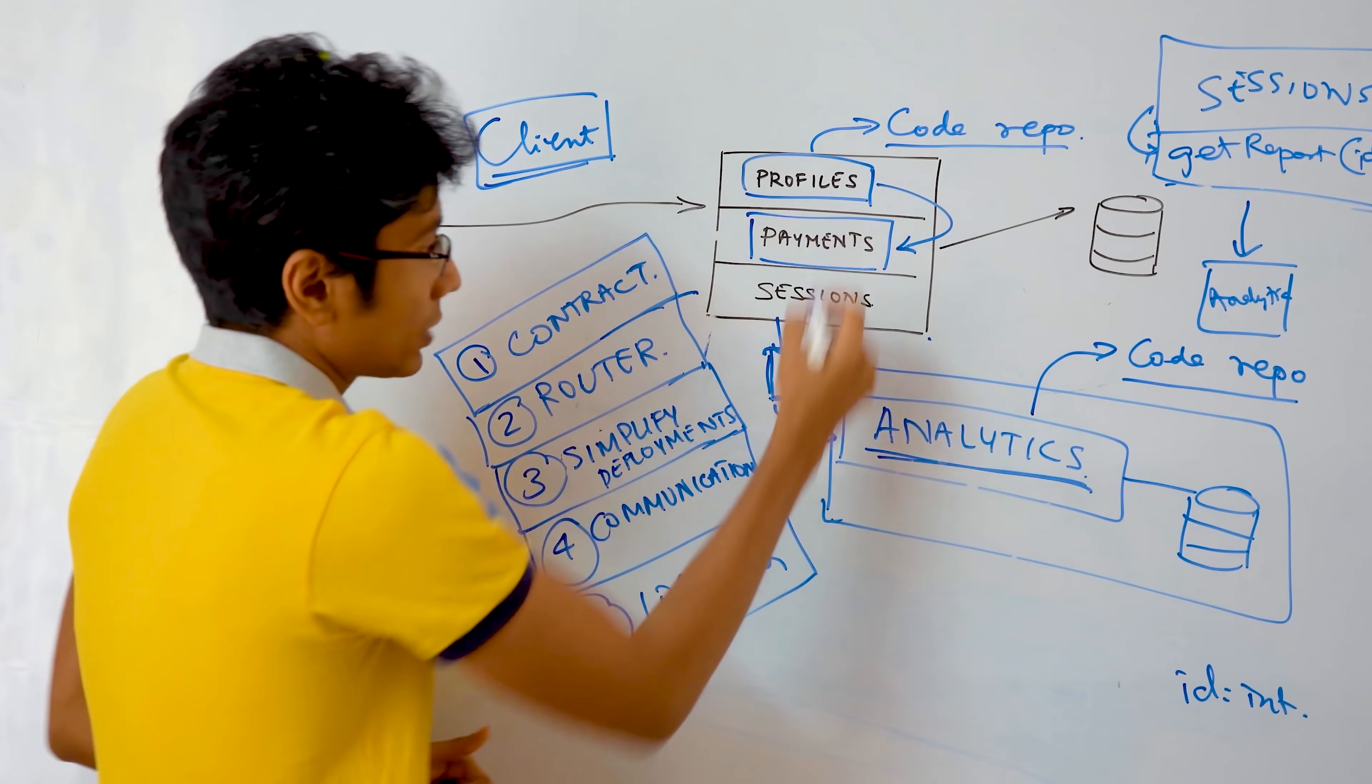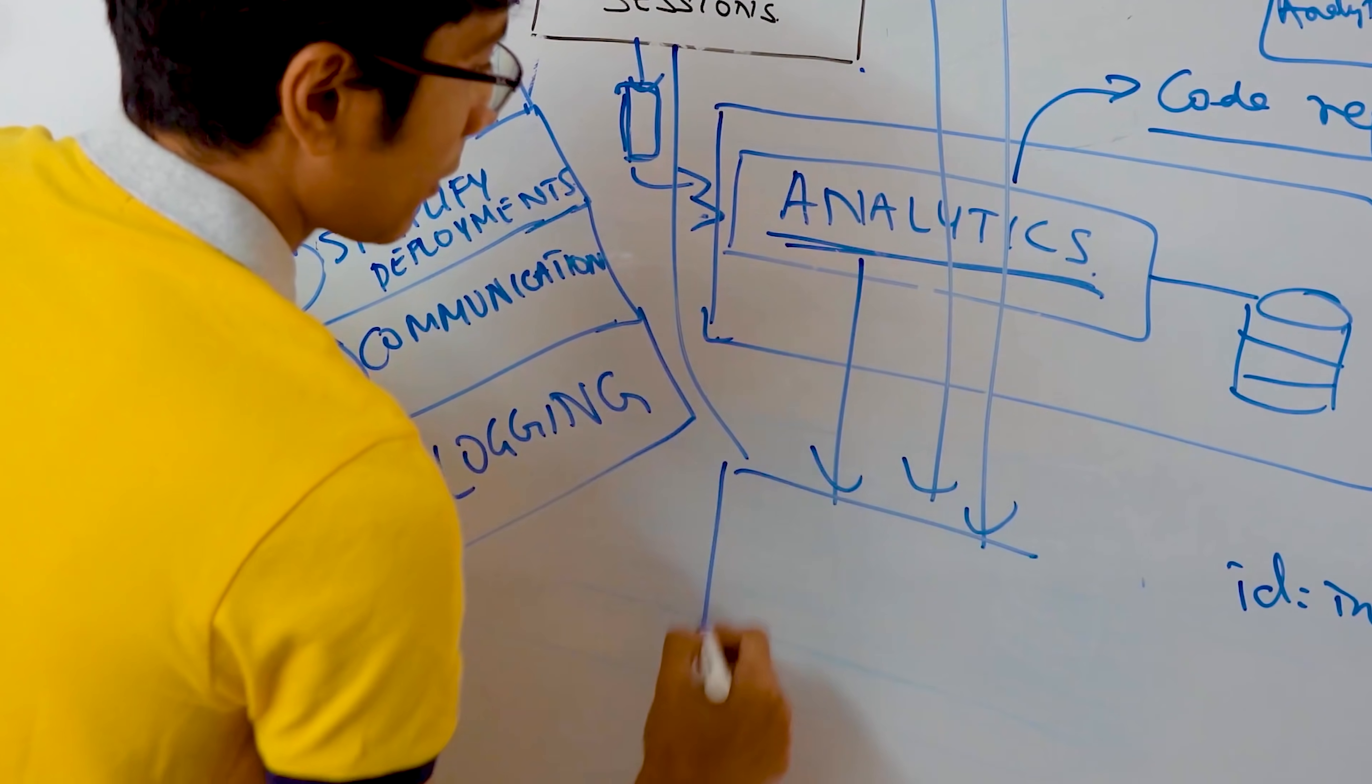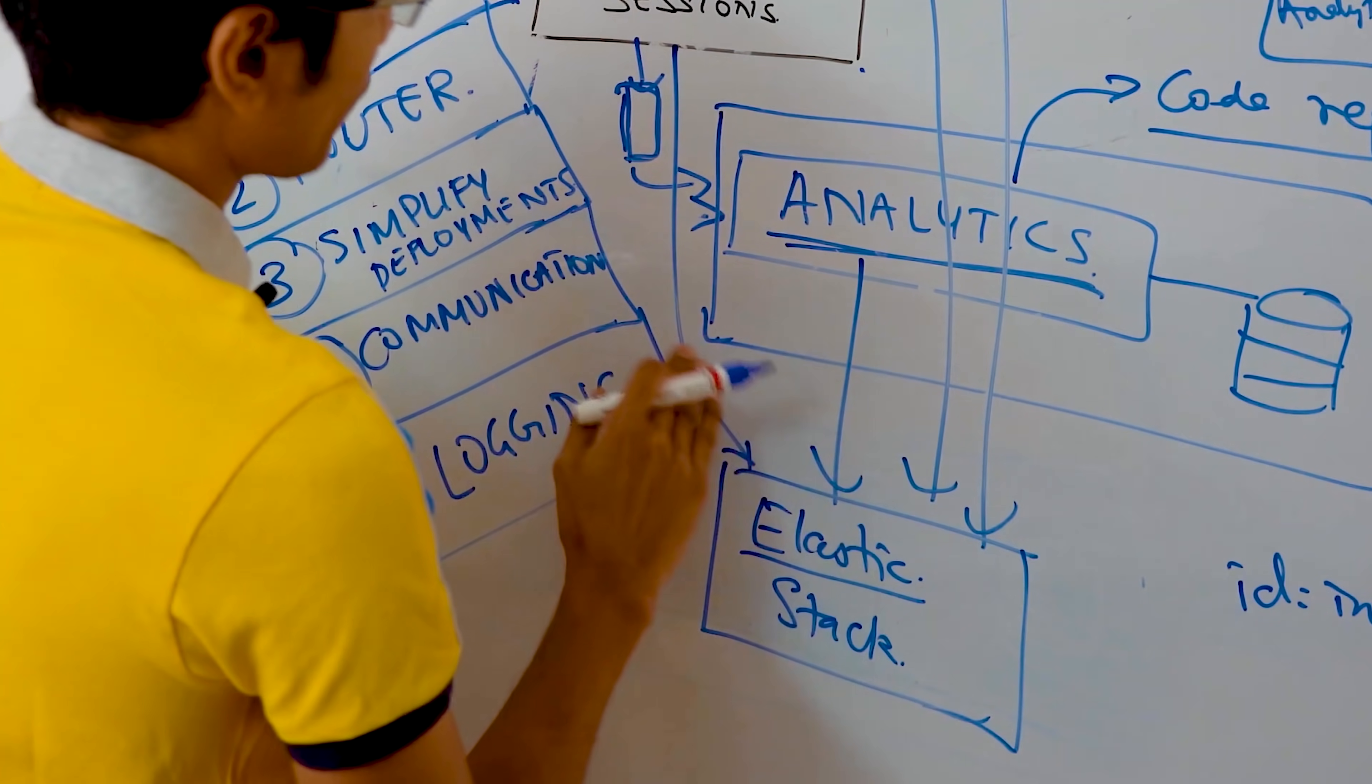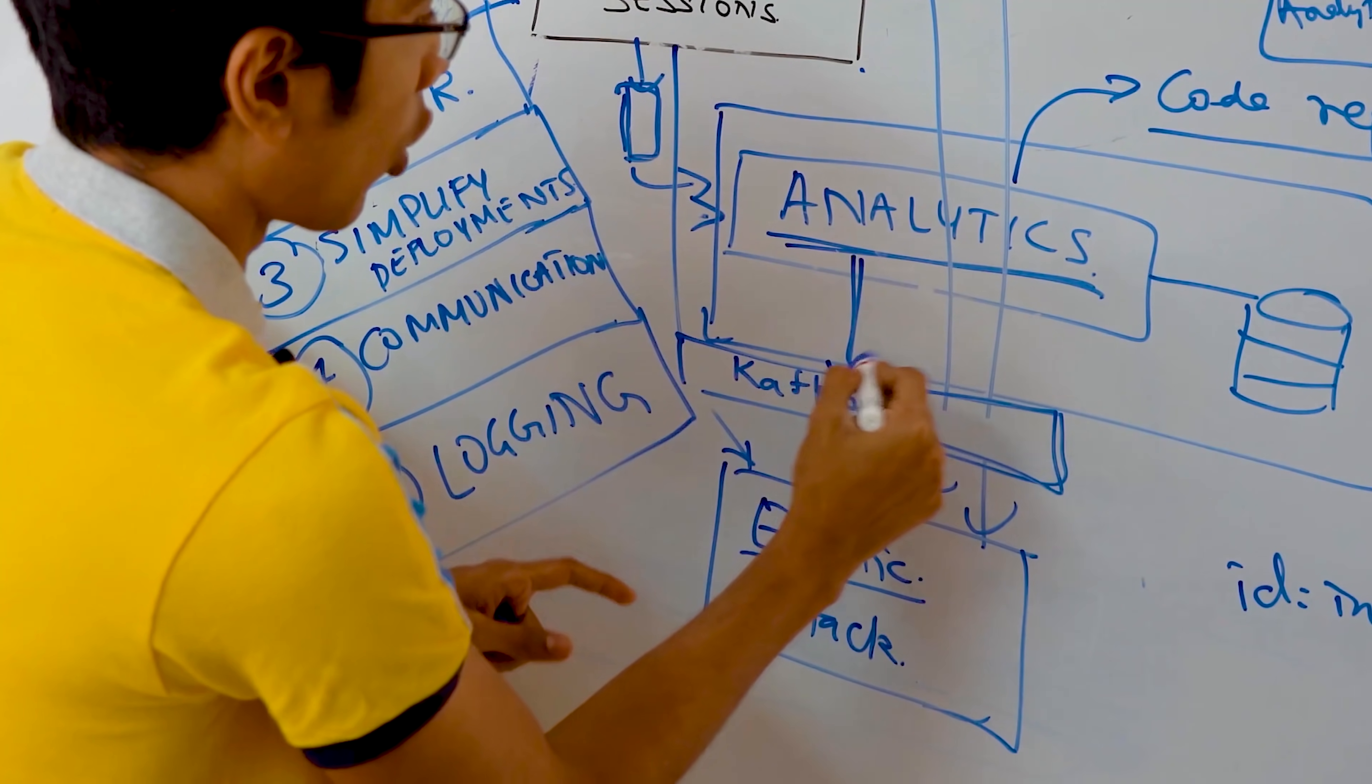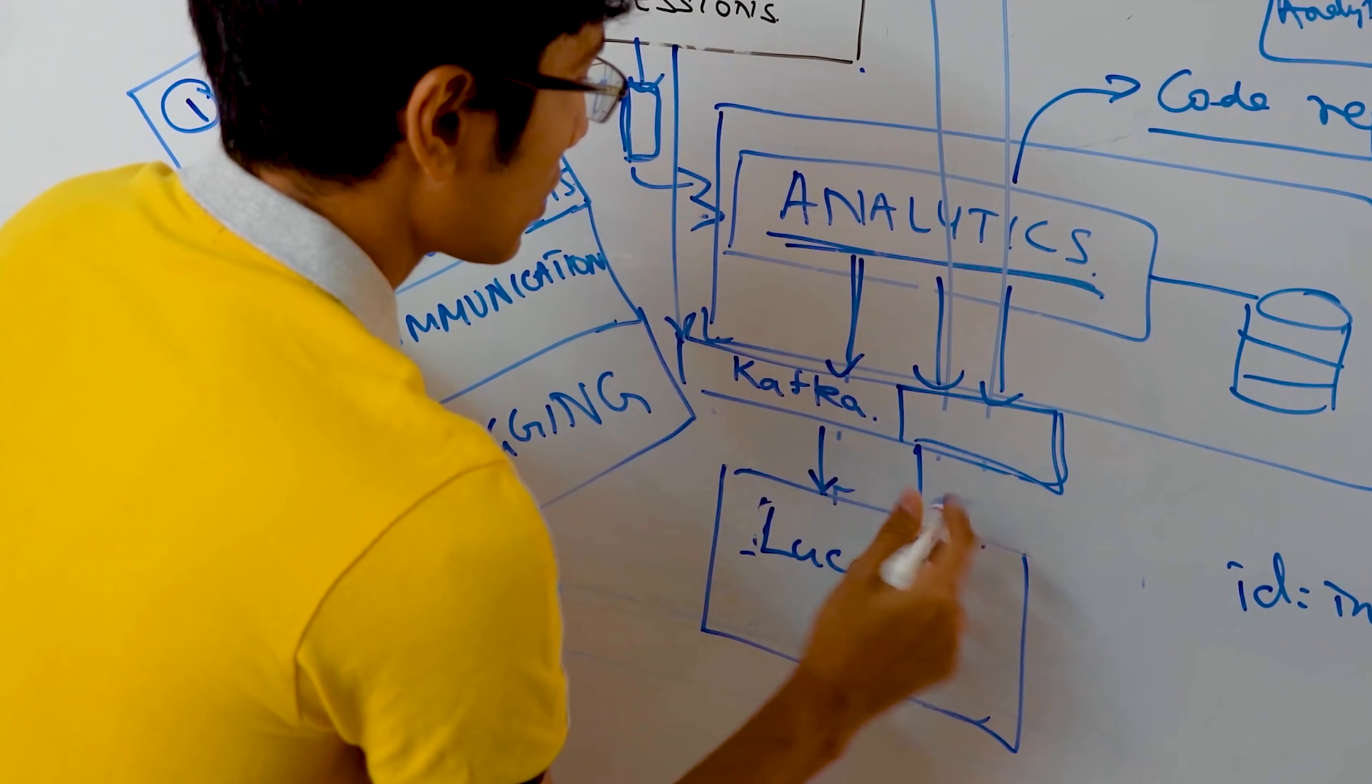Instead, you want to take all the logs in all the services and push it into a single repository. A single database, so to speak, you can use the elastic stack, which is good at this stuff. And for pushing logs, you can do it through a message queue like Kafka. Kafka can take all of the logs from all of these services, and then you can store them in something like Lucene, which is a part of this stack.